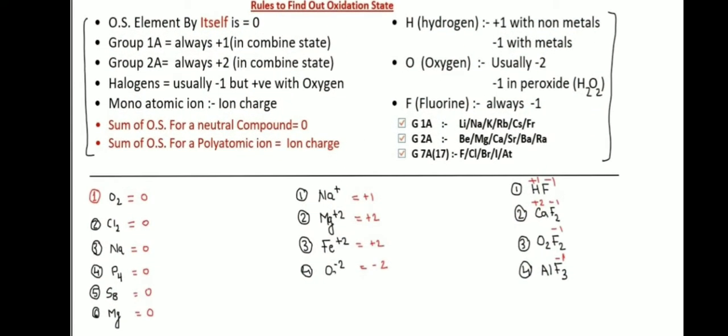Rules to find out oxidation state. First one: oxidation state of an element by itself is zero.